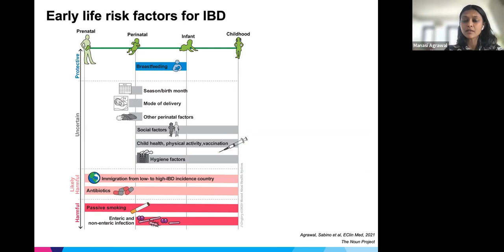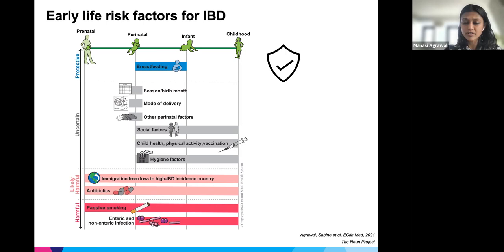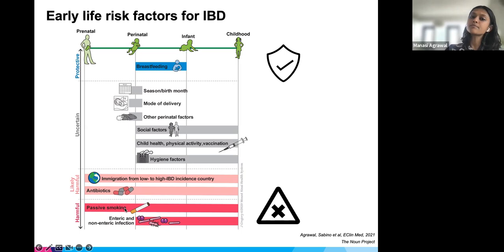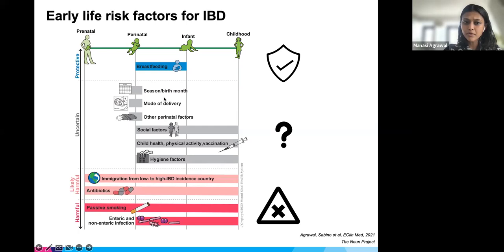In the context of IBD, we conducted a systematic review and meta-analysis of over 130 studies on early life environmental factors. Breastfeeding was consistently protective — children who were breastfed had a lower risk of IBD, with breastfeeding beyond six months being more protective than shorter durations. Exposure to smoke during pregnancy and passive smoke during early childhood was harmful. Enteric and non-enteric infections seemed harmful. Immigration and antibiotics were likely harmful but the data were less robust. For other exposures such as birth month, mode of delivery, and perinatal and social factors, the data were very noisy and unclear.